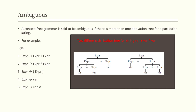In this example, to produce 'var plus var multiplied by var', there are two derivation trees: the first is for the leftmost derivation, and the other is for the rightmost derivation. Both of these trees actually produce the same string 'var plus var multiplied by var', and that is what makes it ambiguous.